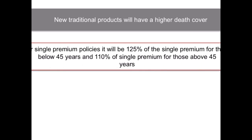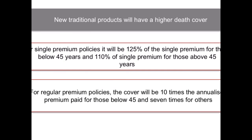New traditional products would have a higher death cover. For single premium policies, it will be 125% of the single premium for those below 45 years and 110% of single premium for those above 45 years. For regular premium policies, the cover will be 10 times the annualized premium paid for those below 45 and 7 times for others. The minimum death benefit in case of a traditional plan is at least the amount of sum assured and the additional benefits, if any. In addition to the sum assured, the bonus or additional benefits as specified in the policy and accrued till date of death shall become payable on death if not paid earlier. These plans would continue to come in two variants: participating and non-participating plans.